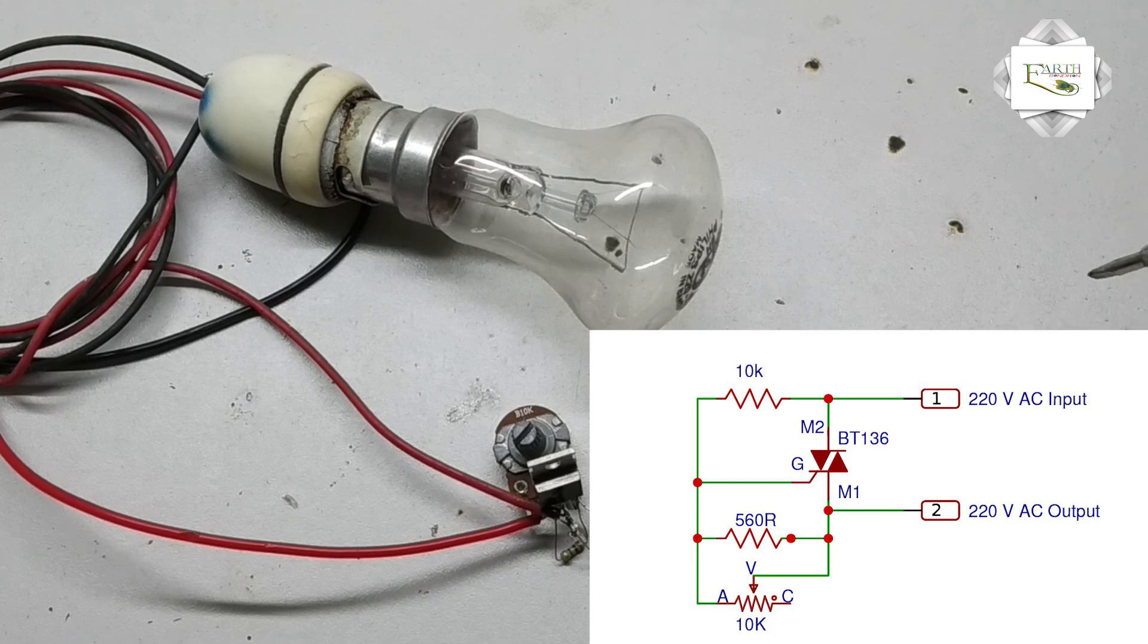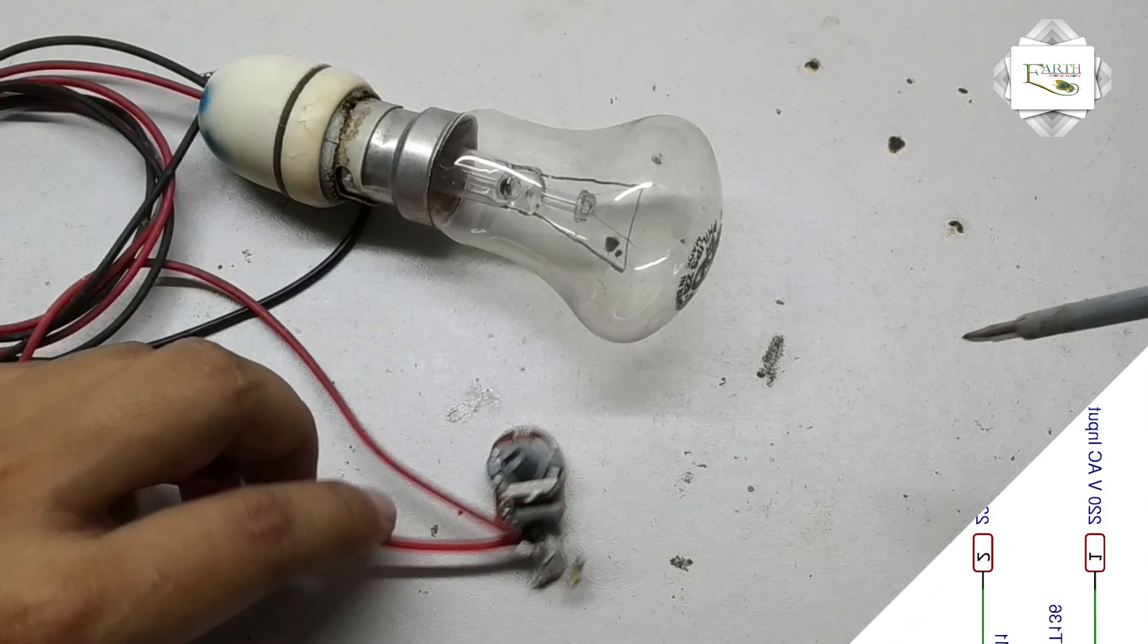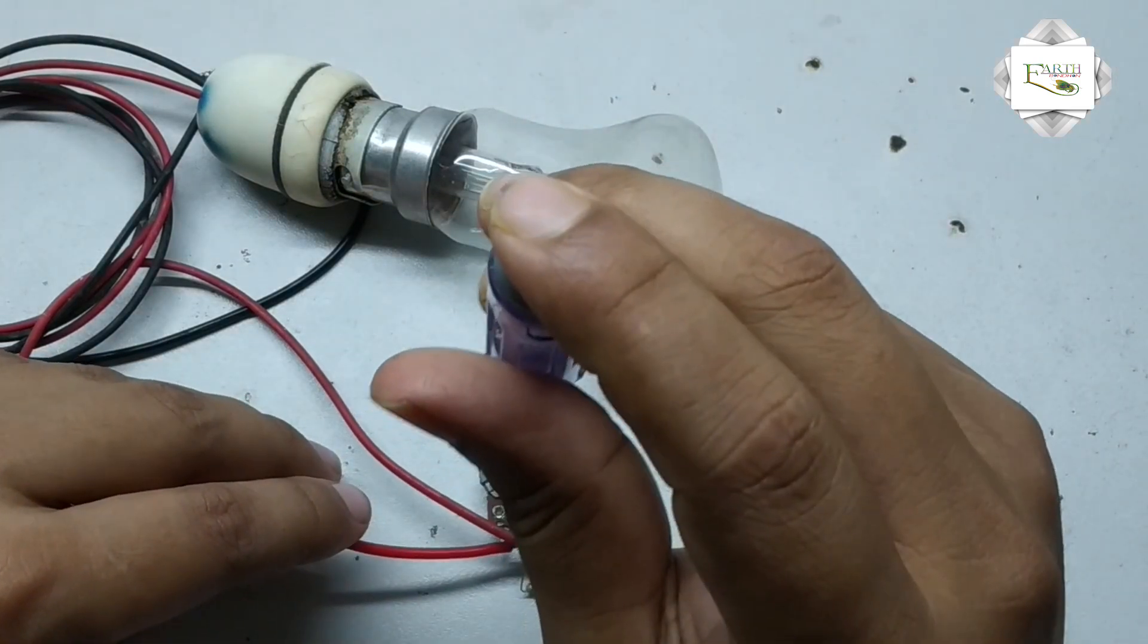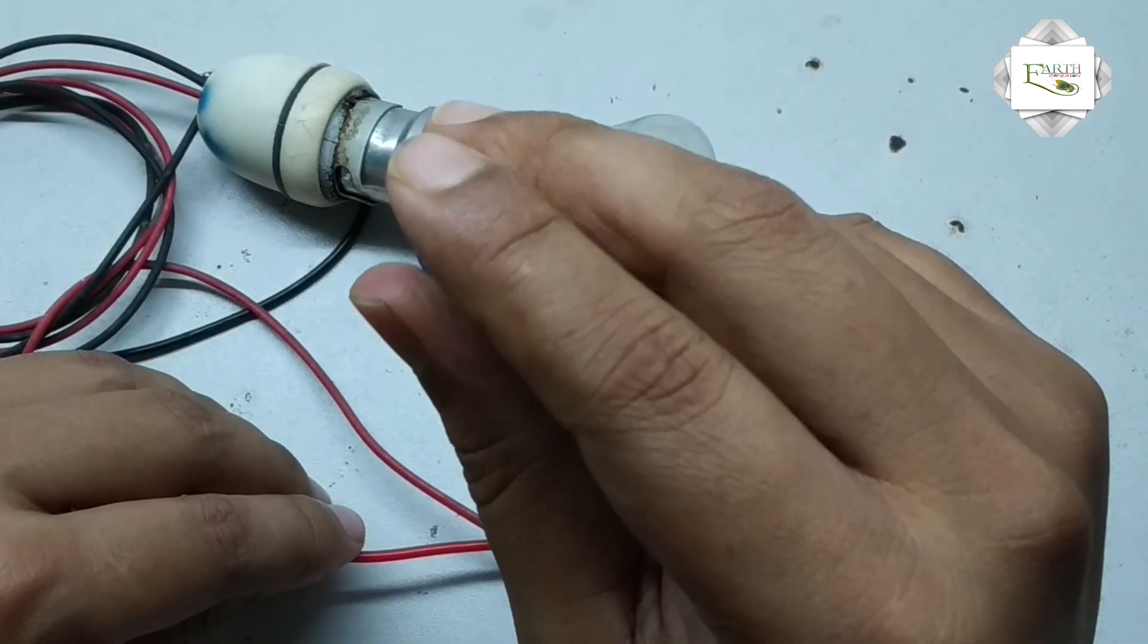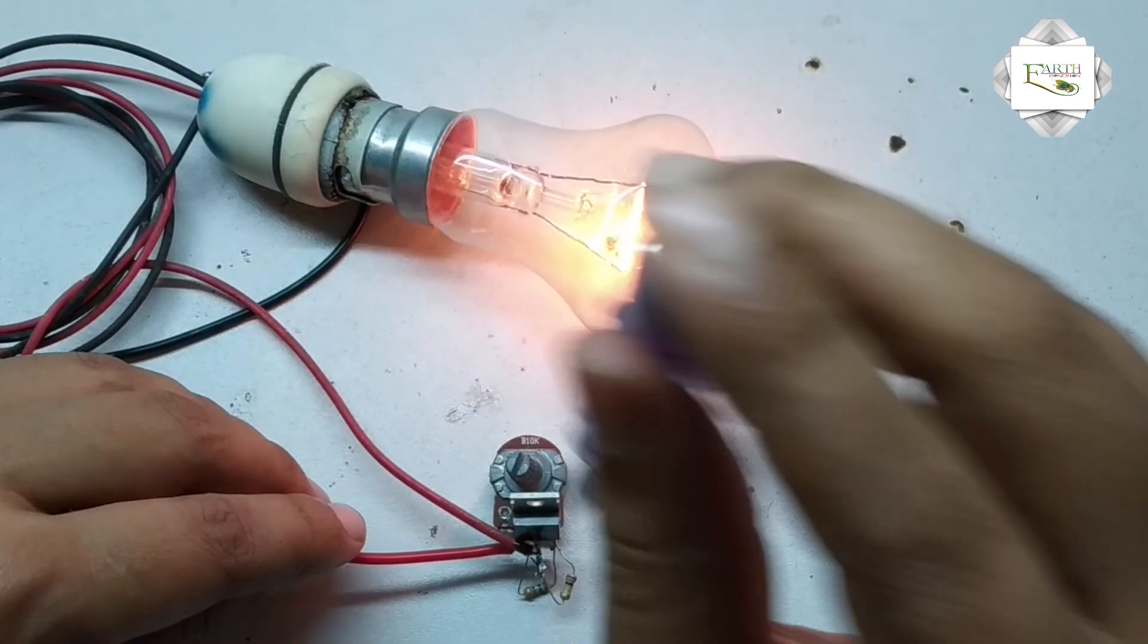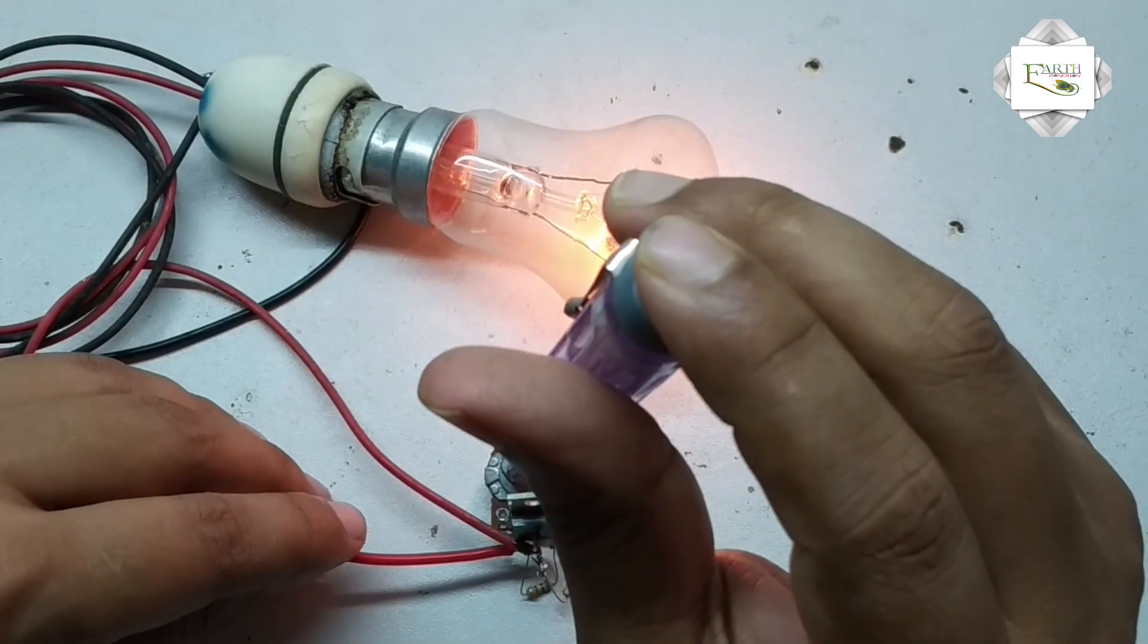Now I supply AC voltage, 220 supply connected. Now I variable the resistance variable and LED is on.